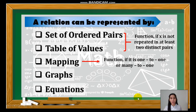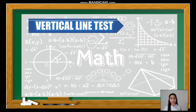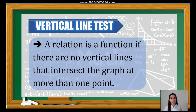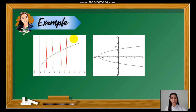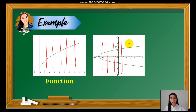Another way to represent a relation is using graphs. Here, we need a concept of vertical line test. A relation is a function if there are no vertical lines that intersect the graph at more than one point. For the first graph, if we draw vertical lines, they intersect the graph at exactly one point. Therefore, this is an example of a function. On our second graph, if we draw vertical lines, they intersect the graph at two points. Therefore, this graph is not a function.